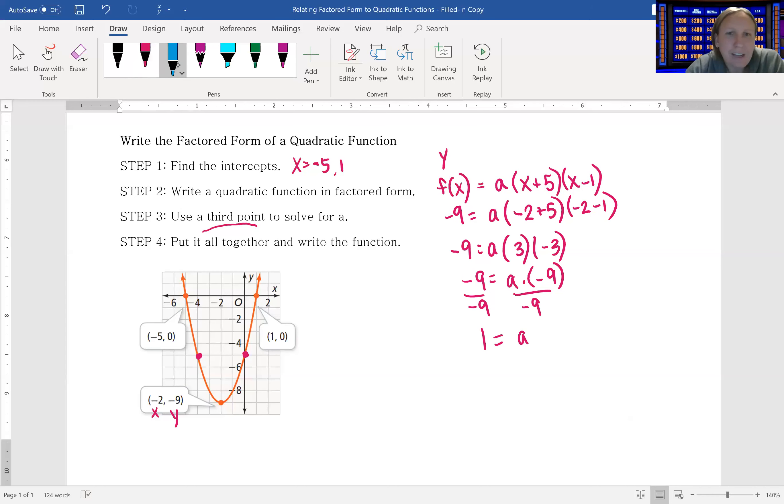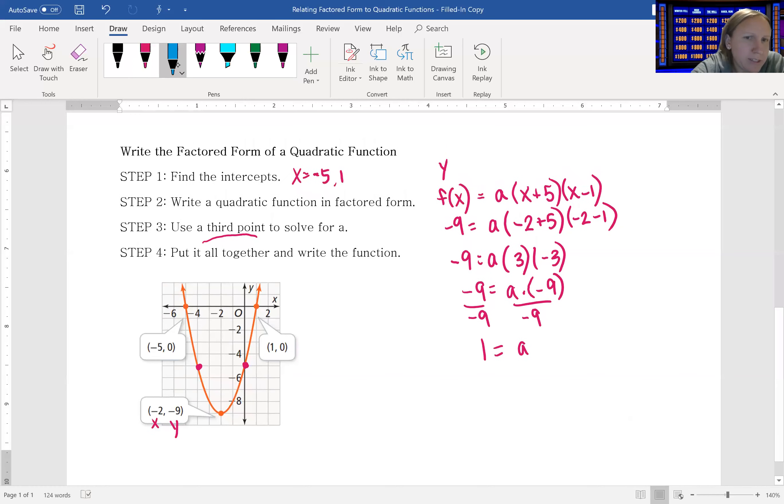I can tell that quickly from my graph using that rate of change pattern, because as x increases from the vertex by 1, that y value jumps up by 1. And we know that in the parent function, it's going to jump by 1, then 3, then 5. So in this case, that a will be equal to 1.